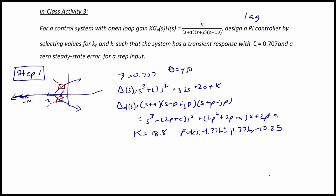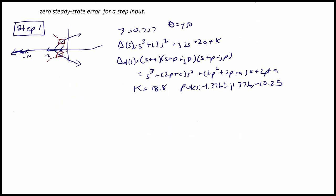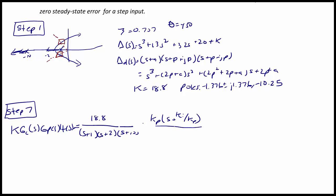We are now ready to move on to step 7. For step 7, we have K·Gc(s)·Gp(s)·H(s) = 18.8/[(s+1)(s+2)(s+10)] times the PI controller, which is Kp(s + Ki/Kp)/s.